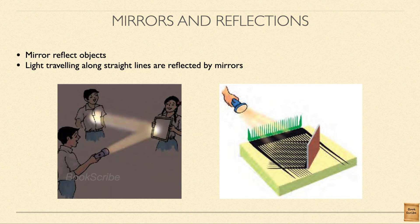We can also do another experiment. Place a thermocol board with a comb standing upright on it, and on the other side place a mirror at a tilted angle. Shine sunlight or a torch from one side. The light will travel through the gaps between the comb's teeth, and the shadow of the comb will fall beyond it. The light then reaches the mirror and gets reflected through the gaps, so light will fall on the ground from the mirror while the opaque parts of the comb form shadows. From this, you can see that light travels in a straight line and also gets reflected in a straight line.